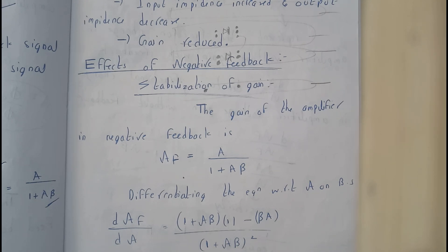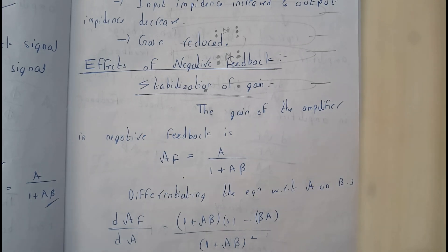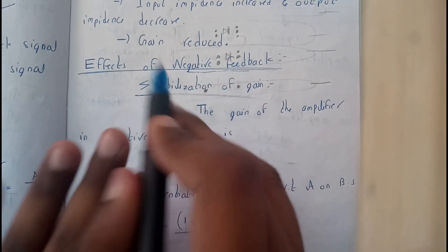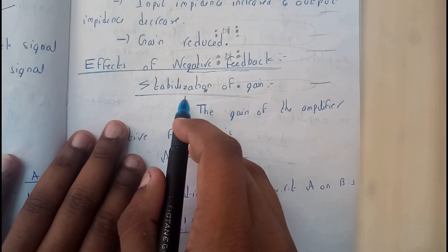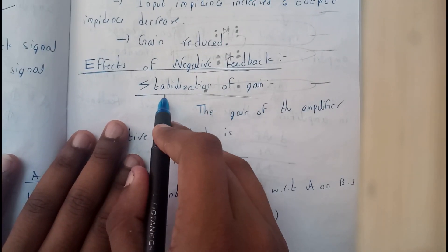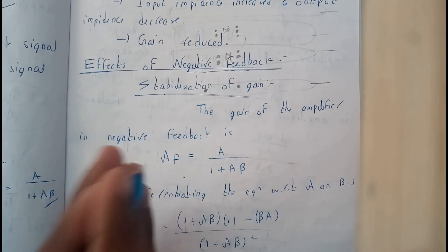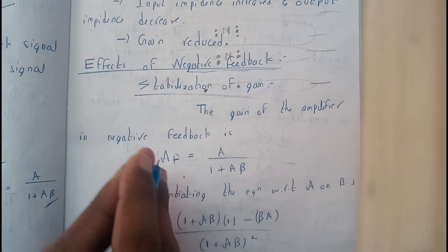So basically there are 4 or 5 effects. I will be going through one after the other — everything will be clear for you. So basically we are going through negative feedback, and how we can say that stabilization of gain is done in negative feedback.